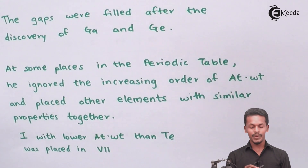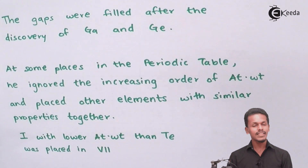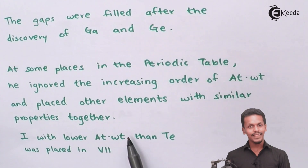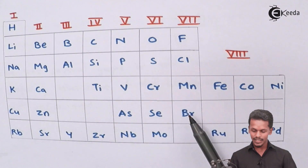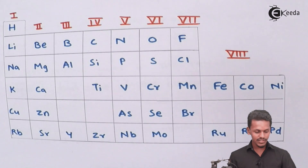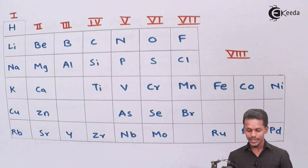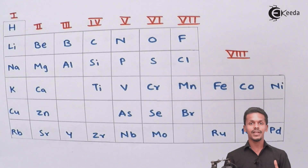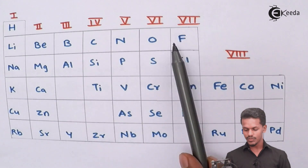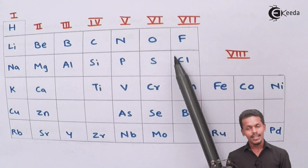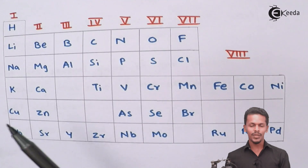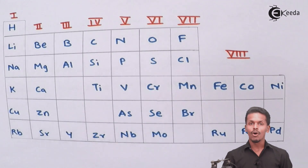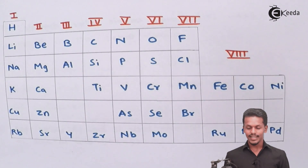At some places in the periodic table, Mendeleev ignored the increasing order of atomic weight and placed elements with similar properties together. For example, iodine, which has a lower atomic weight than tellurium, was placed in Group 7. In Group 7 we can see fluorine, chlorine, and iodine — they are all halogens, and that is the reason they are kept in the same group. So at some places he prioritized chemical properties over the strict order of atomic weight.